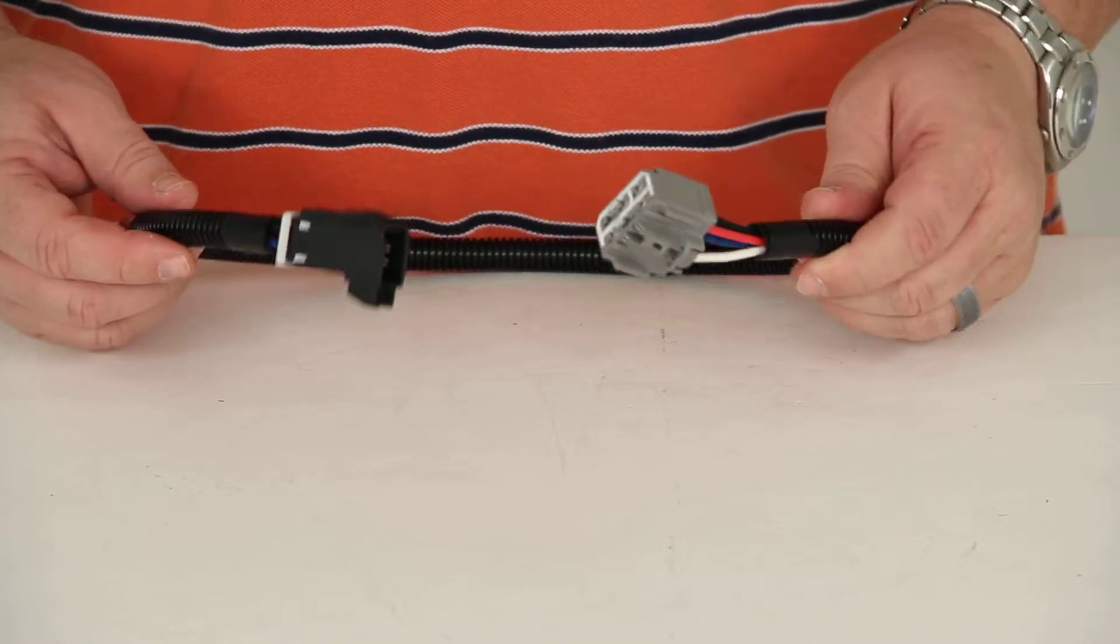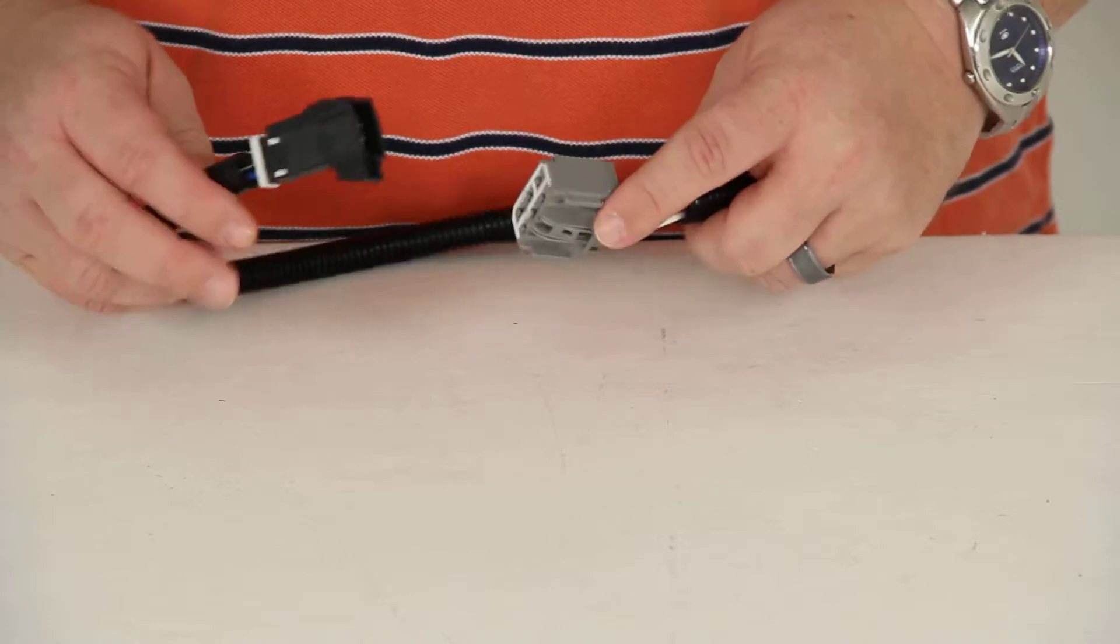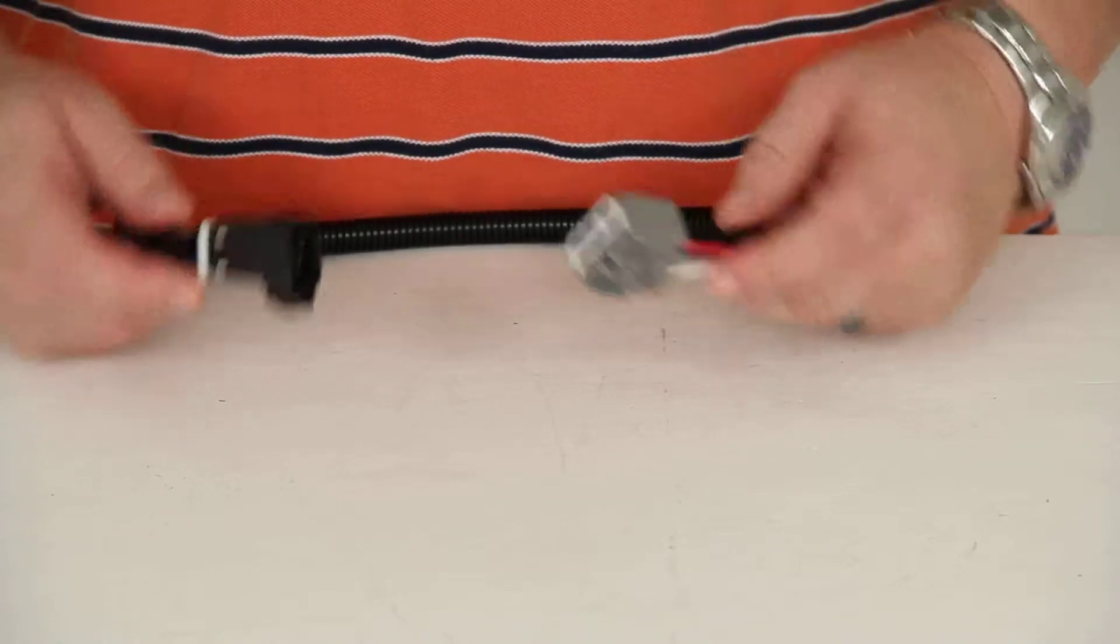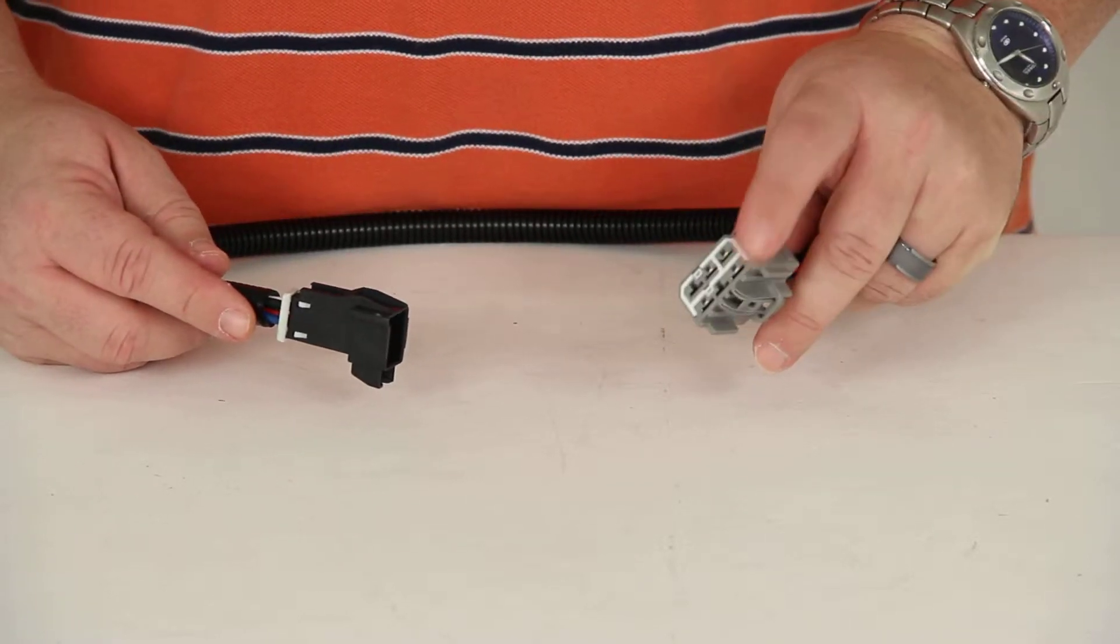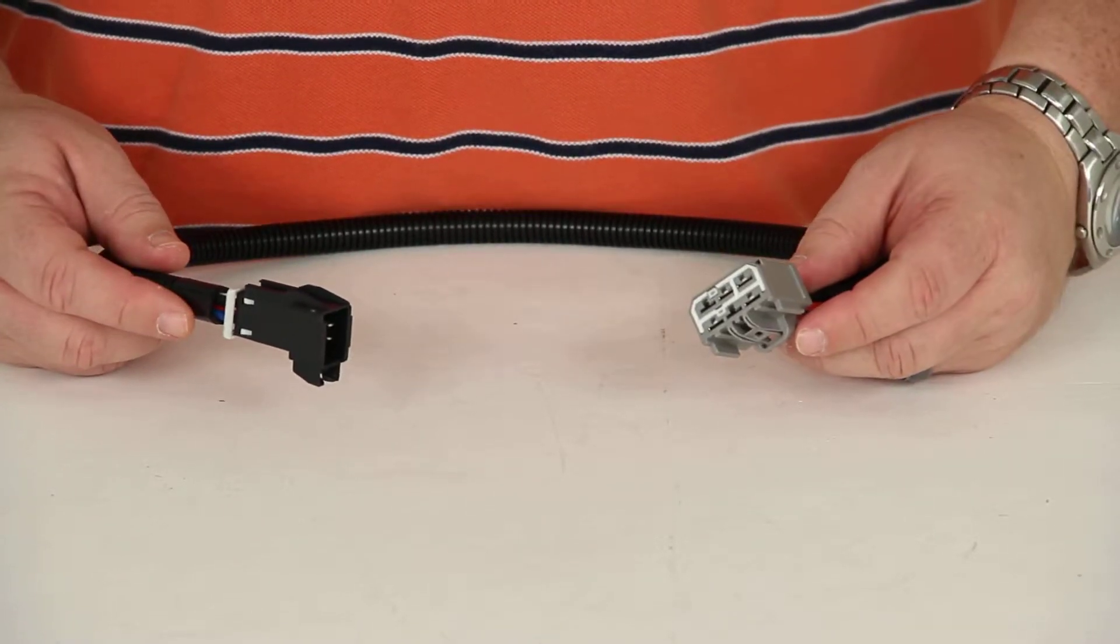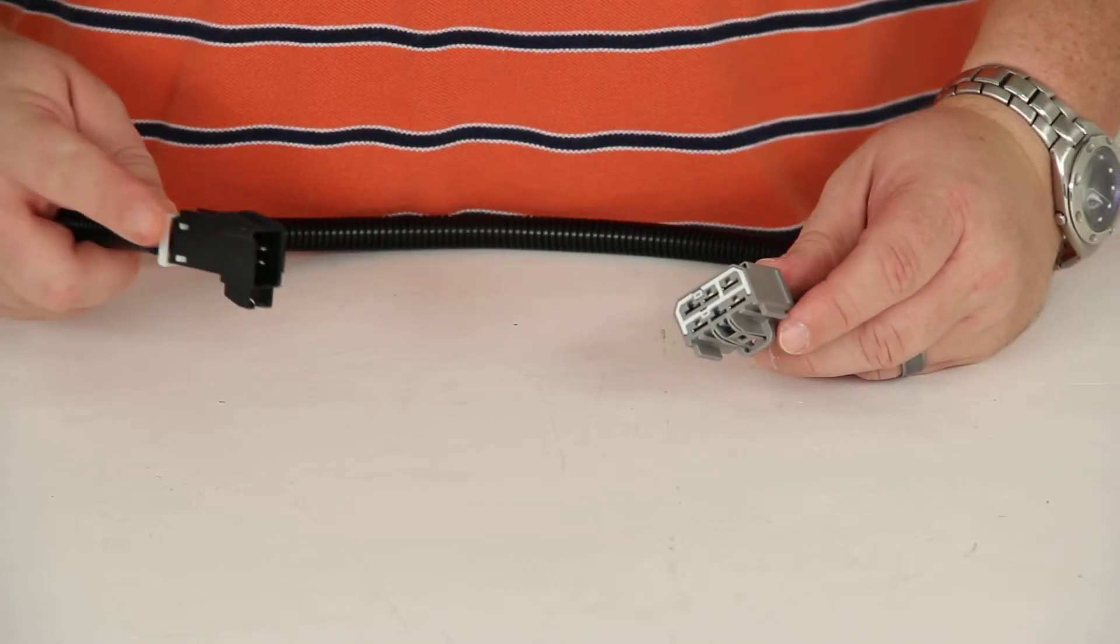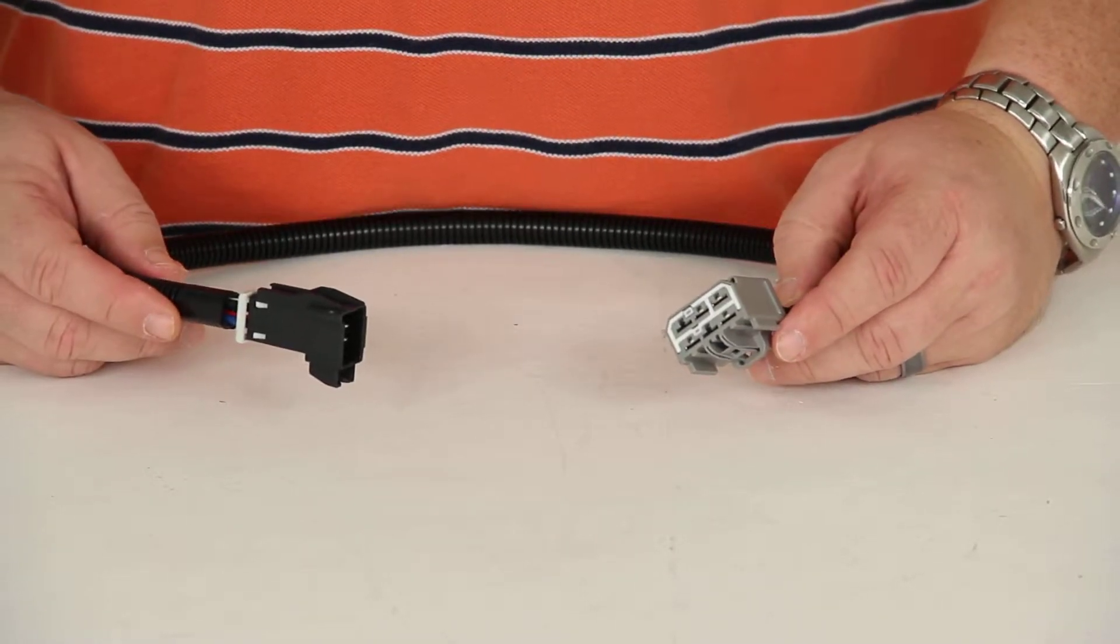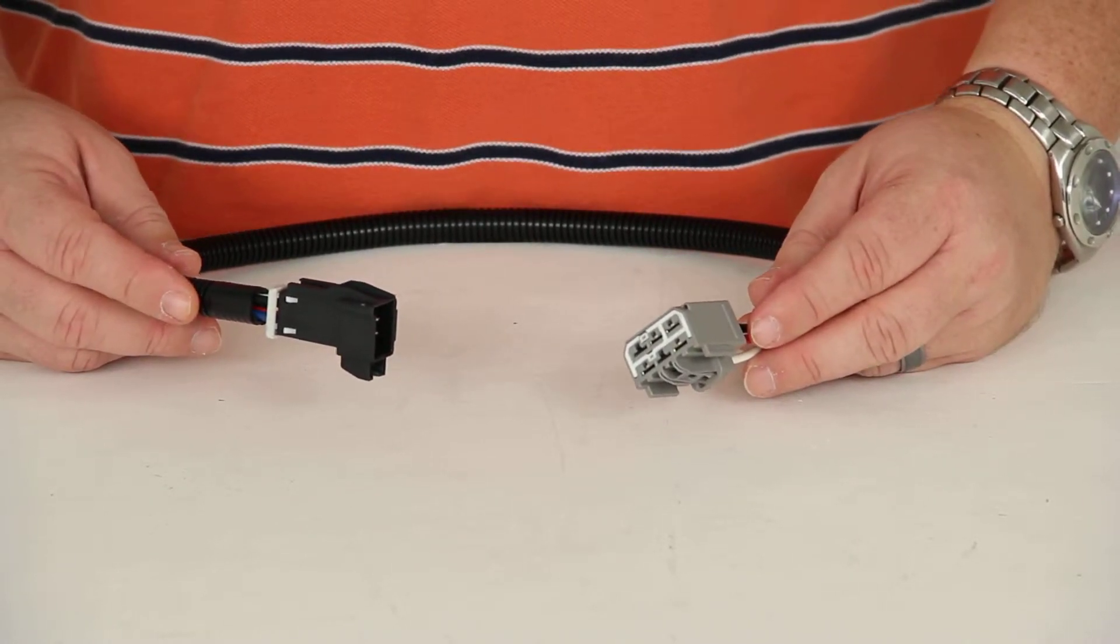This adapter allows for a quick simple installation of your electric trailer brake controller thanks to the ends here. No cutting or splicing is required. The custom connector, this one right here, fits into the built-in port beneath the dash of your vehicle with this one fitting into the back of your electric brake controller and we'll show you how that works in just a moment.